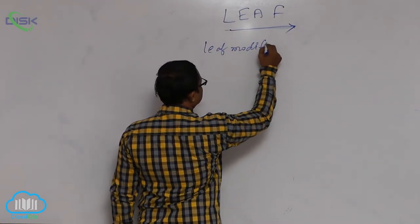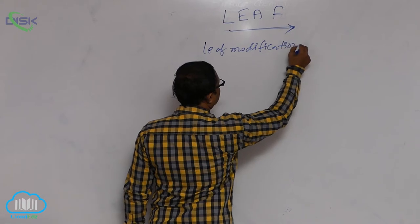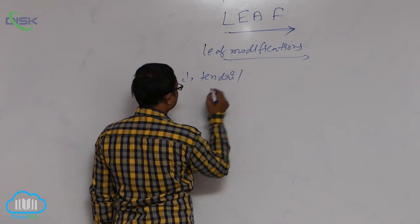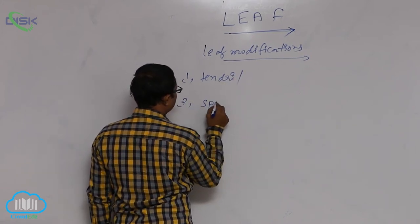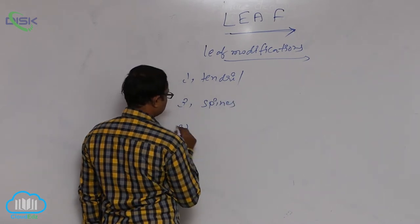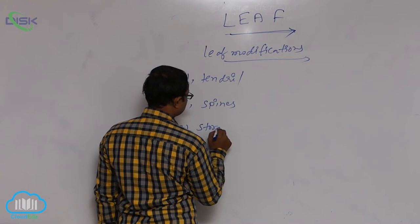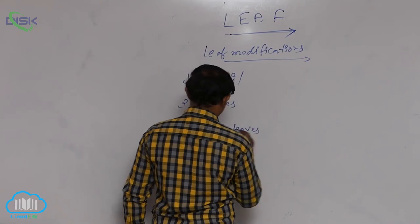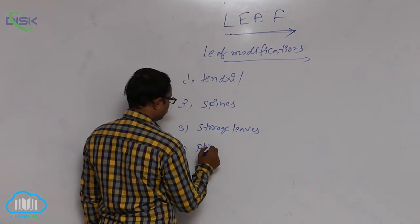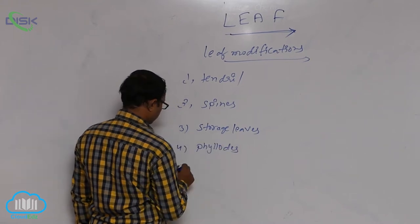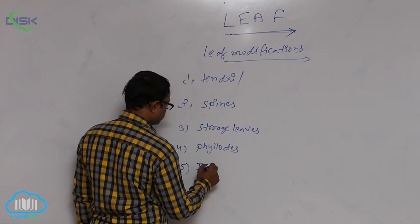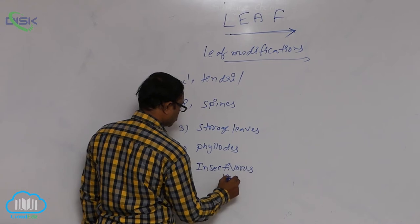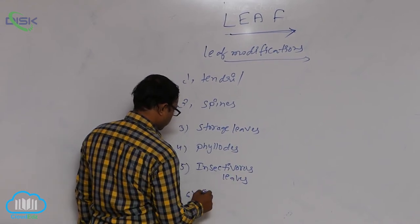Leaf modifications. What is the first one? Tendril. The second one is spines. Third one is storage leaves. Fourth one is phyllodes. Fifth one is insectivorous leaves. Sixth one is reproductive leaves.